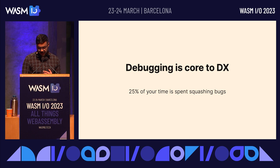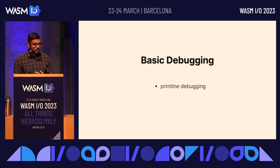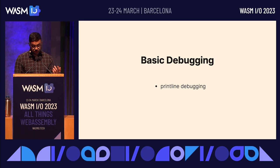Basic debugging involves using print-line debugging, which is the most basic tool. Essentially, just log out your variables, run the code, and work backwards to figure out what's going wrong. Unit tests are a little bit better, but these are the most basic tools in your tool belt.